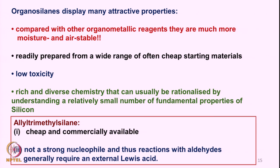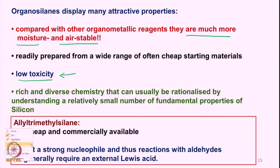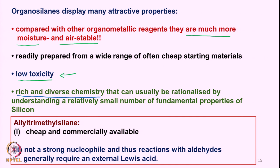Organosilanes display very useful and attractive properties compared to other organometallic reagents. Allyl silanes and vinyl silanes are more stable, and they are moisture and air stable compared to other organometallic reagents. They can be easily prepared from a wide range of starting materials, and they have low toxicity in comparison to many other reagents. They actually lead to rich and diverse chemistry.